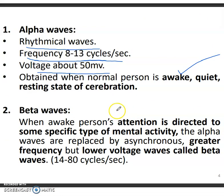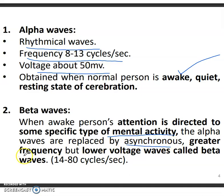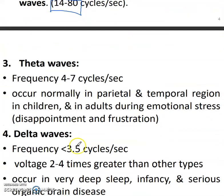Beta waves occur when there is some kind of specific mental activity. The alpha waves are replaced by beta waves when the person starts thinking. These are greater in frequency but lower in voltage — 40 to 80 cycles per second.